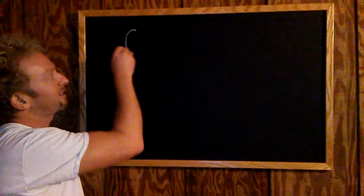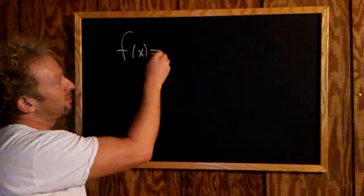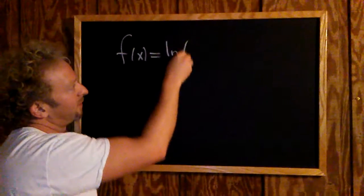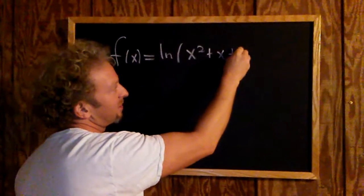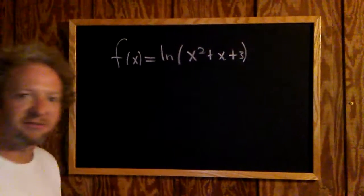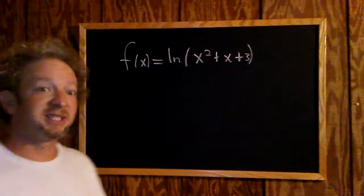Find the derivative. So we have f of x equals the natural log of x squared plus x plus 3. Okay, and we're going to find the derivative using some really basic calculus.